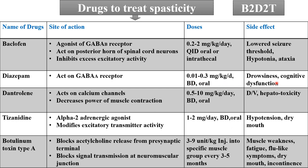In children, baclofen and diazepam are generally used. Dantrolene and tizanidine are very rarely used. Dantrolene acts on calcium channels and decreases the power of muscle contraction; dose is 0.5 to 10 mg/kg/day BD orally; side effects are diarrhea, vomiting, and importantly hepatotoxicity — requiring monitoring. Tizanidine is an alpha-2 adrenergic agonist that modifies excitatory transmitter activity; dose is 1–2 mg/day BD orally; side effects are hypotension and dry mouth.